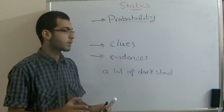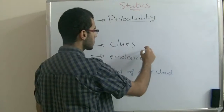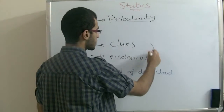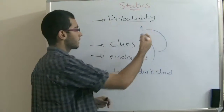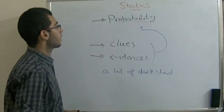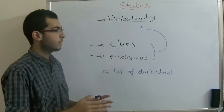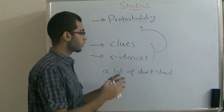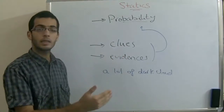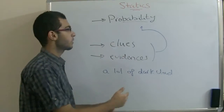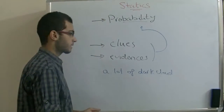But in some cases we cannot collect the sufficient clues and evidences, so we can't predict the probability of something happening. So in statistics we are going to define this probability in order to find enough clues and evidence to tell that something is probably going to happen. This is the concept of probability in statistics.